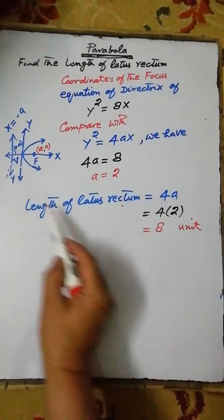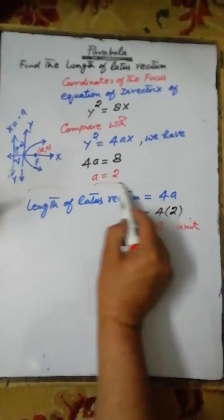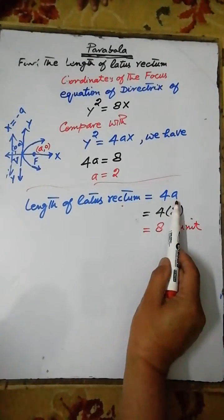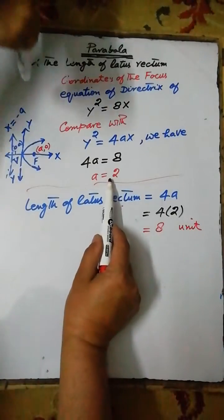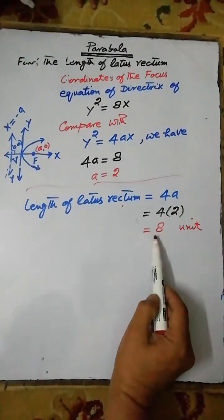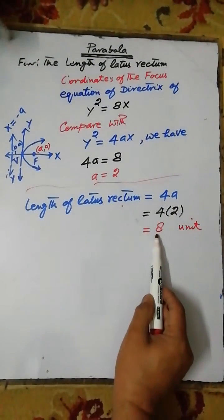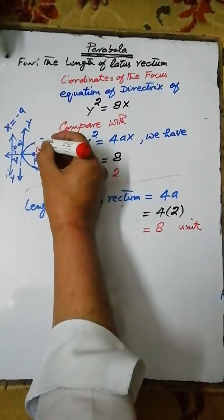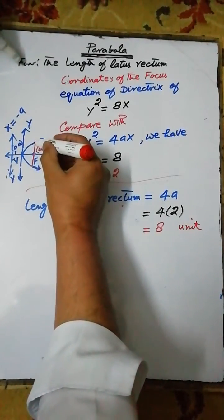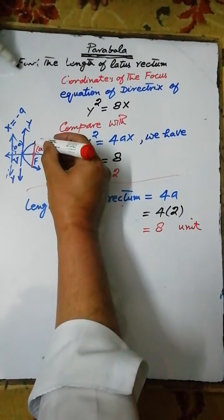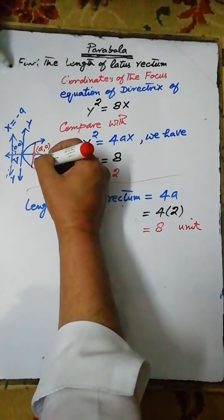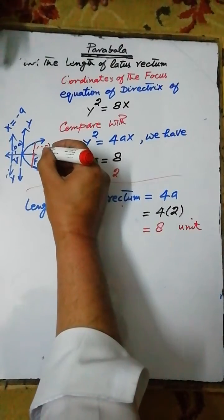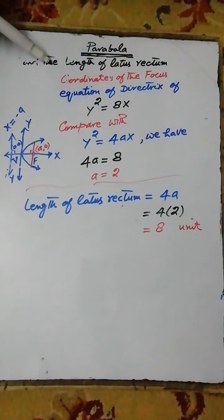Now, the length of the latus rectum of the parabola, as calculated in our previous lecture, is equal to 4a. With a equal to 2, this is equal to 4 multiplied by 2, which equals 8 units. The latus rectum of the parabola is a line segment whose endpoints are the points of the parabola passing through the focus, perpendicular to the axis of the parabola.